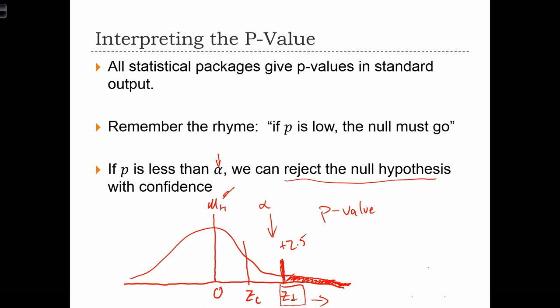Now recall that alpha is the area to the right of the critical value. So alpha is all of this over here. So in this case, we have p is less than alpha. The area to the right of the test statistic, that's p, is less than the area to the right of the critical value, that's alpha.